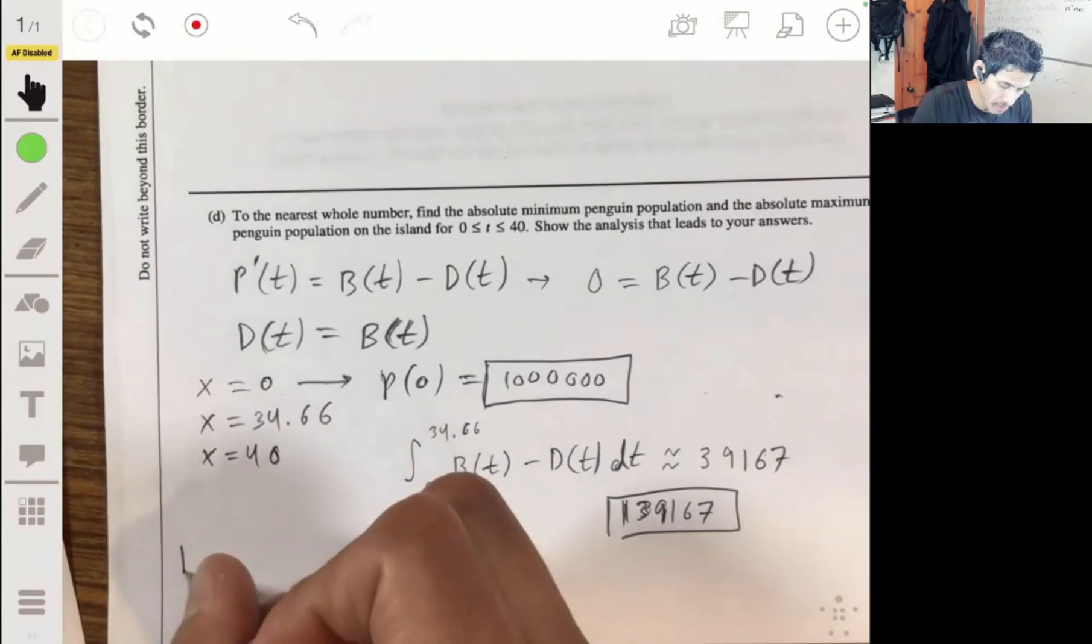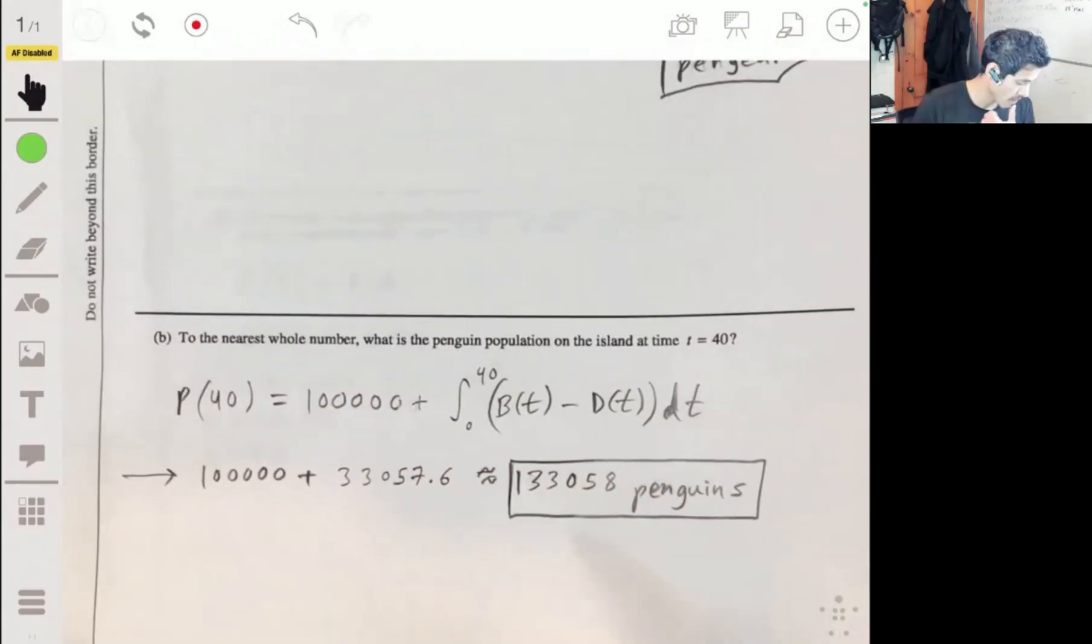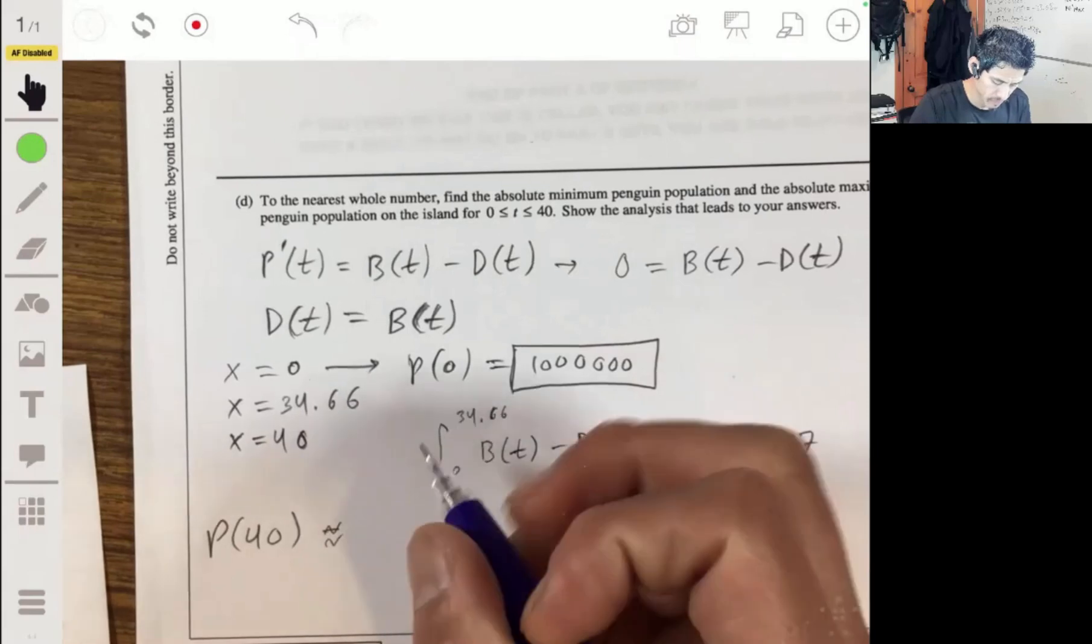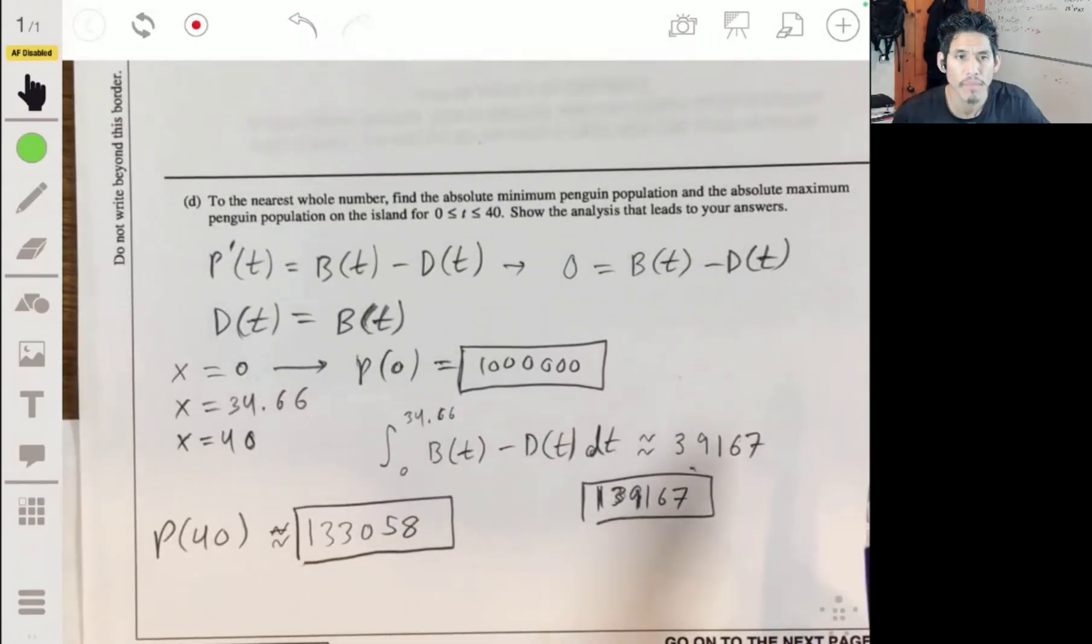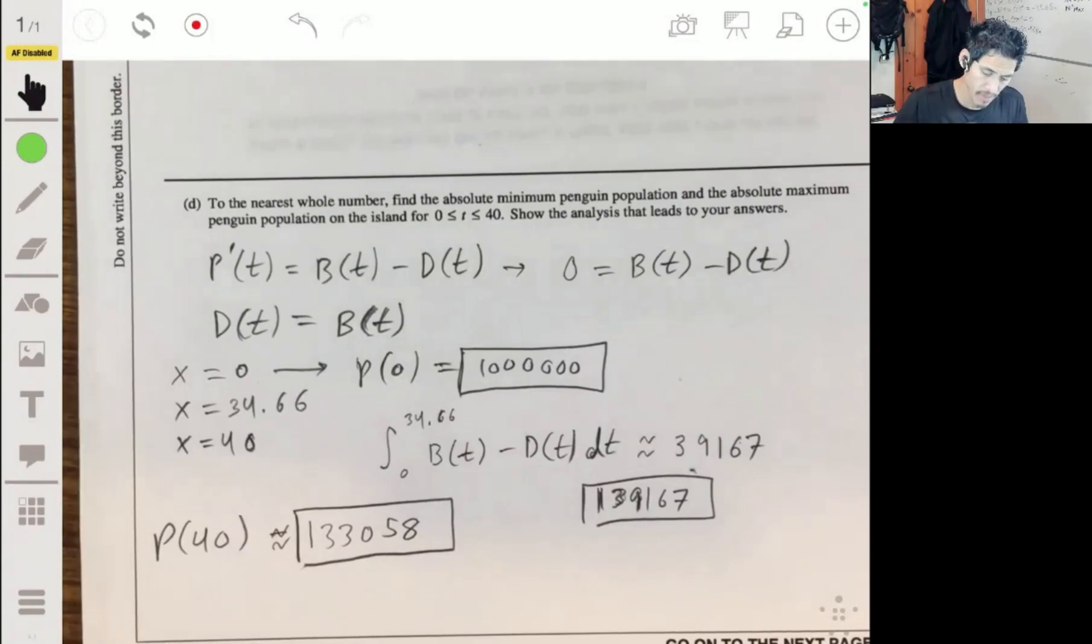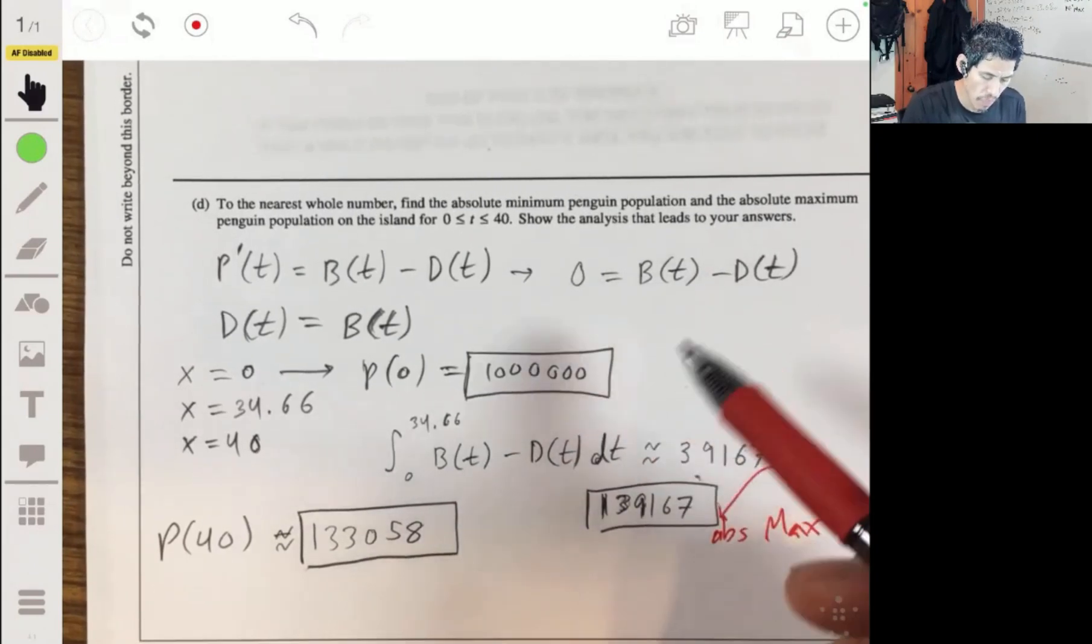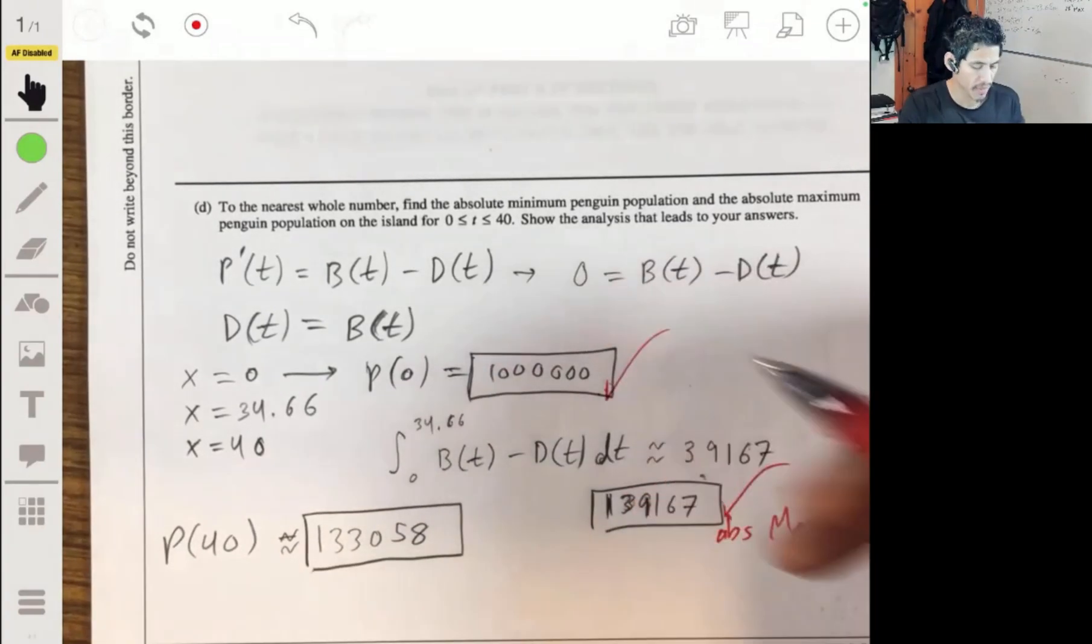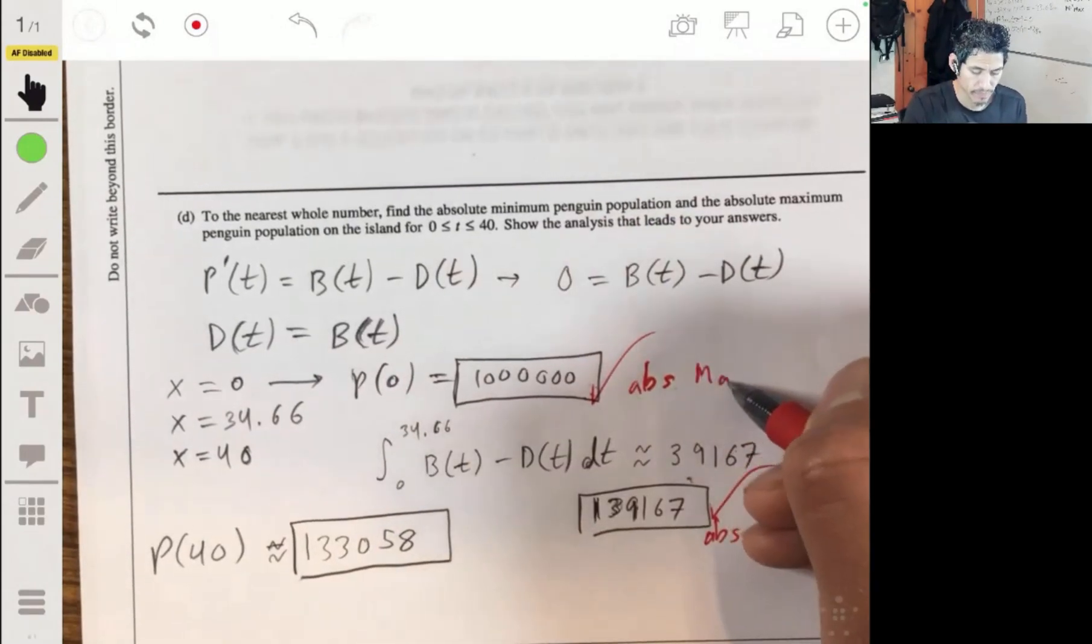P(40) we already had over here: 133,058 penguins. The absolute minimum and absolute maximum on the island - the maximum is 139,167. The minimum was 100,000 because that's what the population started with and they stayed above that the whole time.